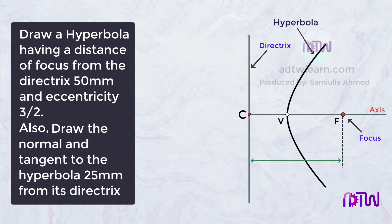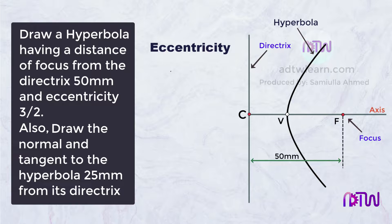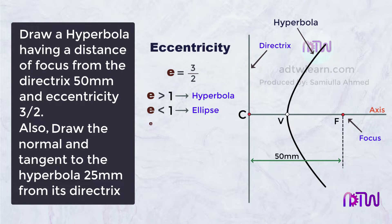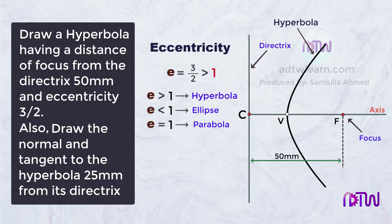Here, we can see the distance of focus from the directrix is given as 50mm, and the eccentricity, which we denote by E, is given as 3/2. We have to remember: if the value of eccentricity is more than 1, then we get a hyperbola. If the value is less than 1, we get an ellipse. And if the value is equal to 1, we get a parabola. In this case, it is more than 1, so it is a hyperbola.